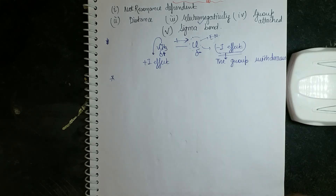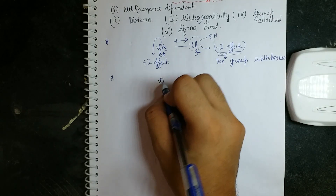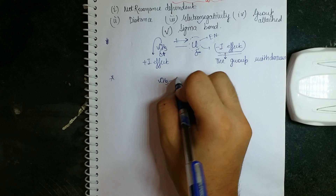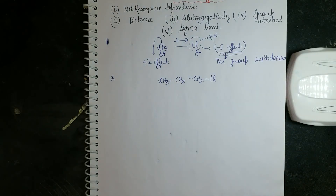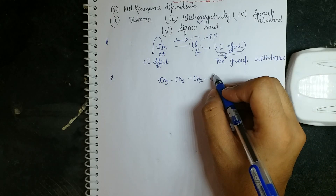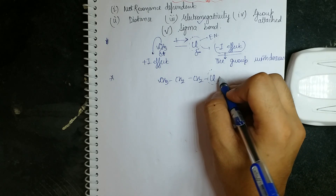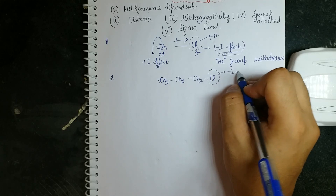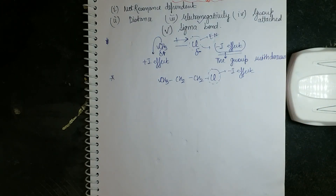We decided based on electronegativity — chlorine is more electronegative than carbon, so it is a withdrawing group showing minus I effect. Now let's look at the distance factor. Consider CH₃CH₂CH₂Cl. Chlorine is an electron withdrawing group showing minus I effect.